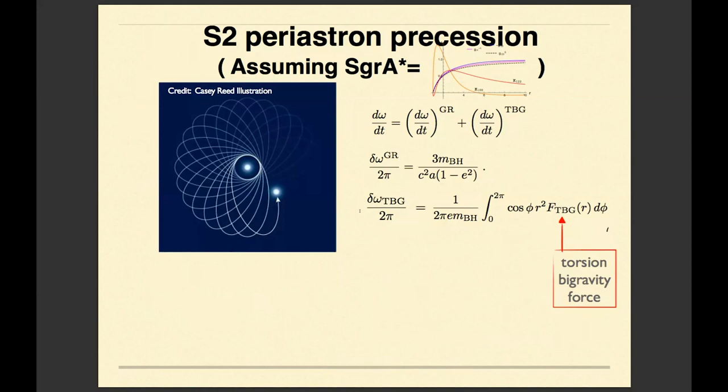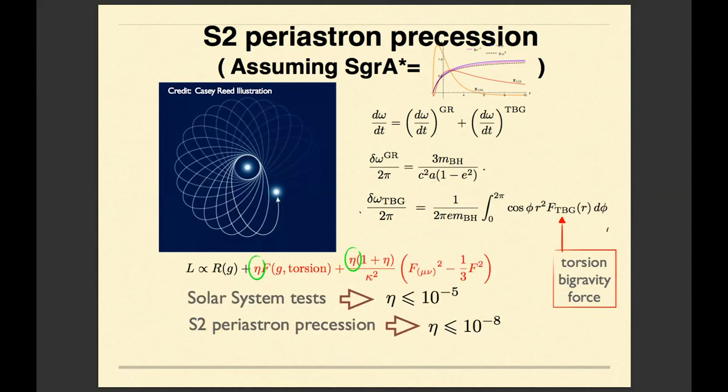And one can calculate the periastron precession of the star S2 around my black hole. And actually, surprisingly, I found that if this black hole is my black hole, the periastron precession would be enormous. It would be much, much bigger than the periastron precession in general relativity.